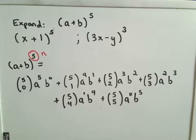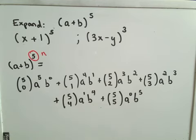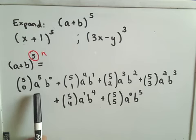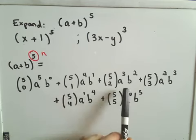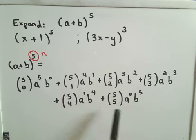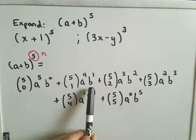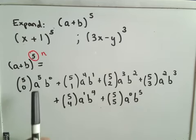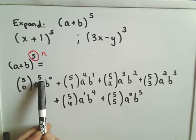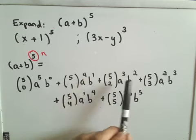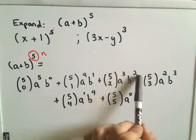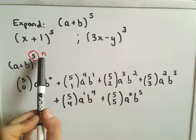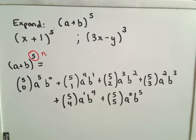We still have to calculate the coefficients 5C0, 5C1, 5C2, 5C3, and so on. But notice the pattern: the exponent on the a's decreases, and the exponent on the b's increases. Also, if you add up the exponents in each term — 5 and 0 is 5, 4 and 1 is 5, 3 and 2 is 5 — the exponents always sum to n. That's another little thing to look for.